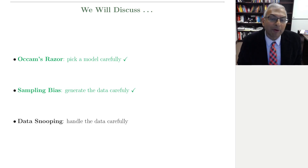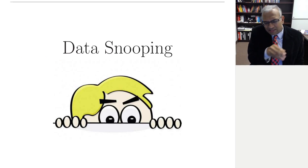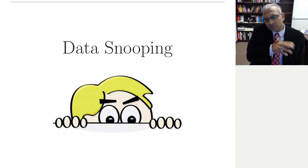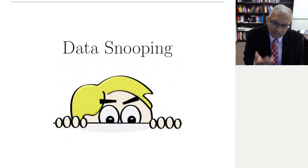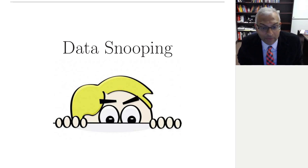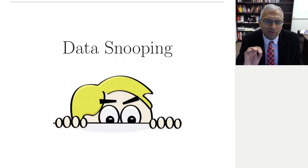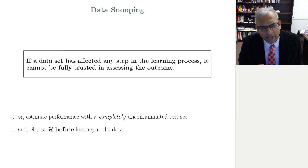Now let's talk about data snooping. Data snooping is literally trying to get a subtle peek at the data in order to make some subtle choices, so that what you get from the data looks great — and you think you've gotten away with it, but you have not. You cannot get away with data snooping. Let's formulate data snooping in a more precise way.